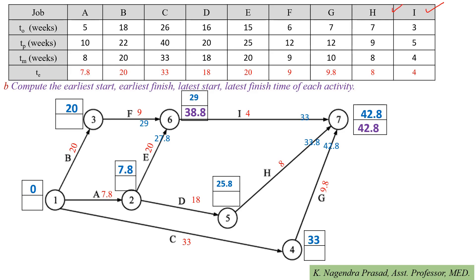For activity H, latest finish time = 42.8 and latest start time = 42.8 − 8 = 34.8. For activity G, latest finish time = 42.8 and latest start time = 42.8 − 9.8 = 33. For activity F, latest finish time = 38.8 and latest start time = 38.8 − 9 = 29.8. For activity E, latest finish time = 38.8 and latest start time = 38.8 − 20 = 18.8.